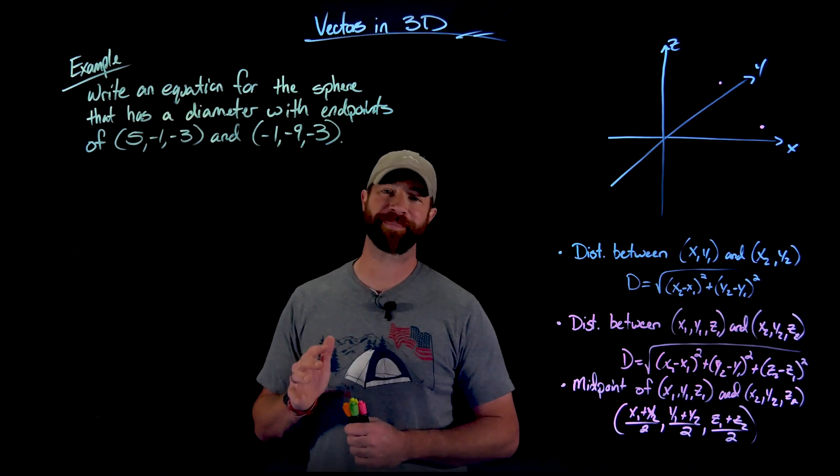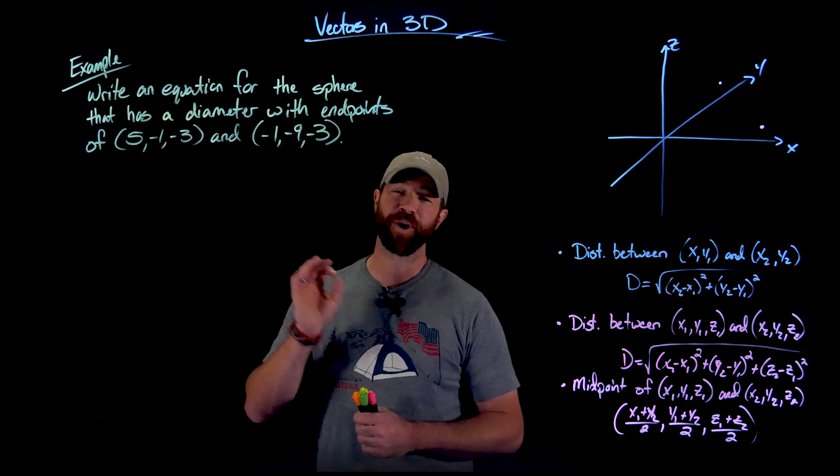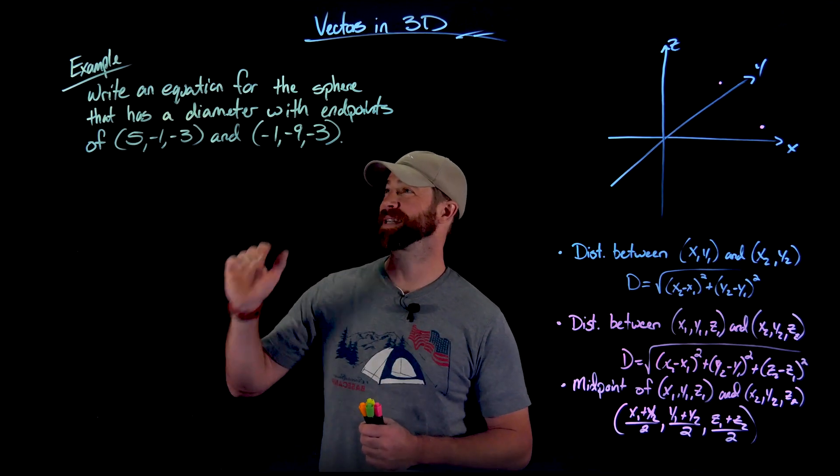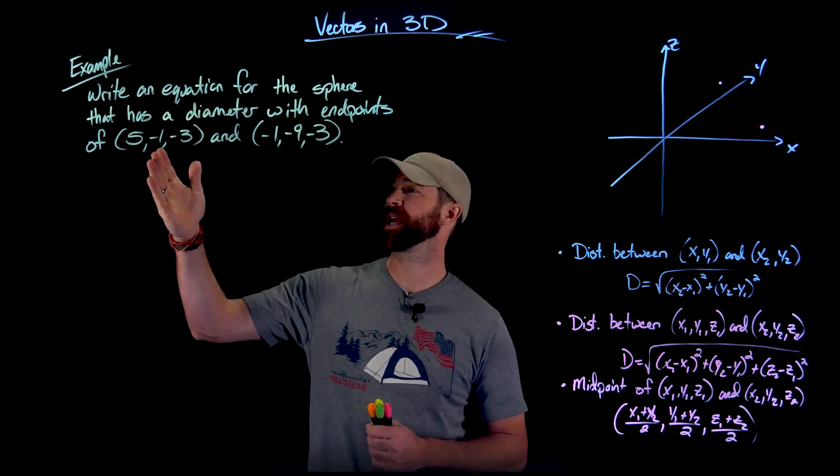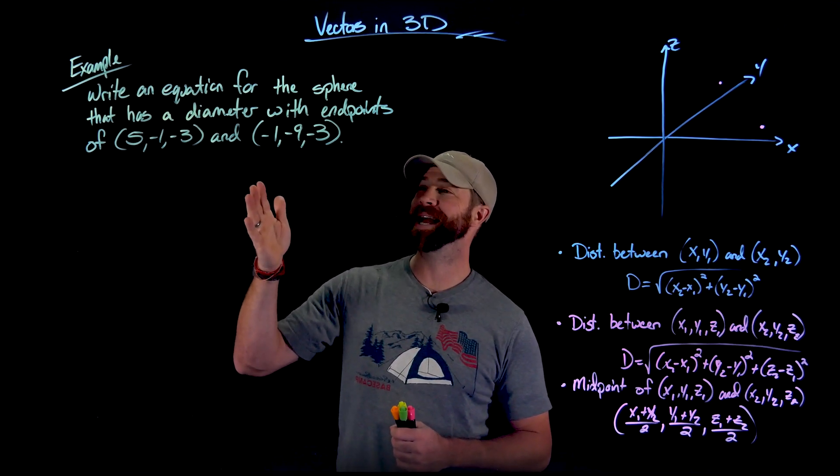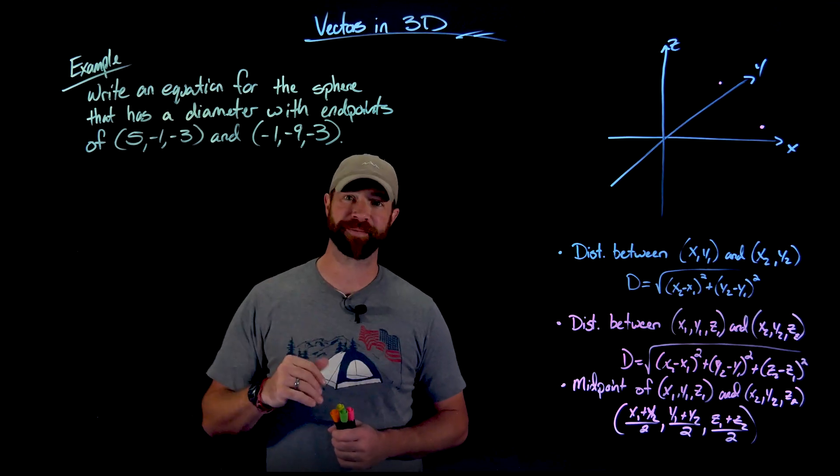And importantly to reiterate, the set of points that make up a ball contain all of the points of the sphere, but also all the points that have a distance less than the radius to the center. So it's the complete solid object. All right. So one great application to do at this point with all the recent stuff we just talked about is to write an equation for a sphere that has a diameter with endpoints of 5, negative 1, negative 3, and negative 1, negative 9, negative 3.